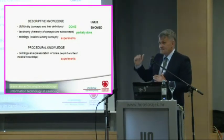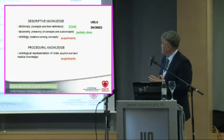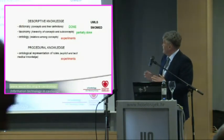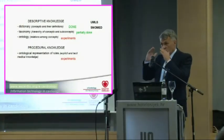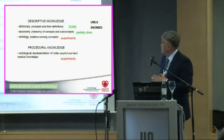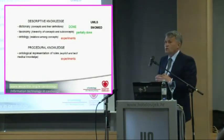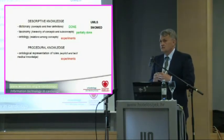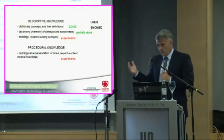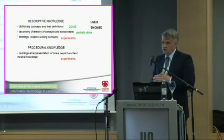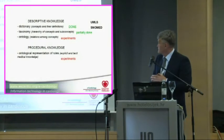The next, or the last stage of descriptive knowledge, are ontologies. Beside concepts and taxonomies — it means hierarchy — ontologies also include relations. Today there are numerous developments in ontologies, but we must say it is still in an experimental phase.